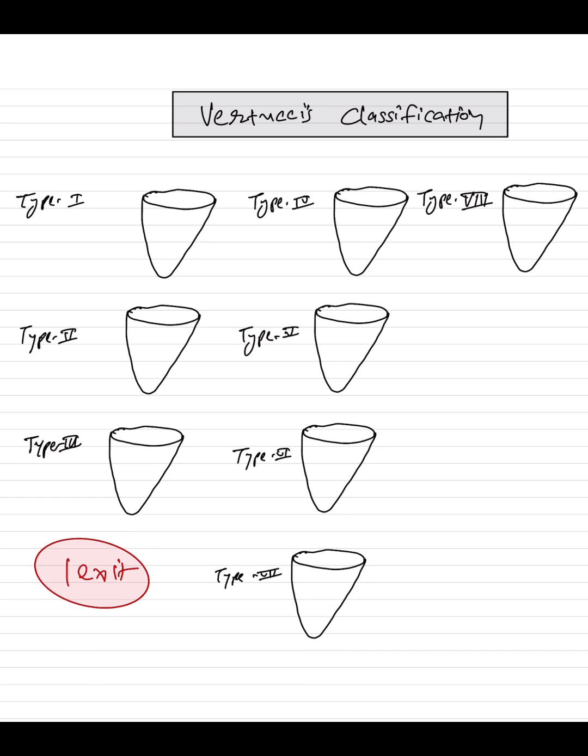There is a single canal throughout in type one. In type two, there are in the beginning two canals which fuse together to create a single exit. So here it is one-one, here it is two-one.